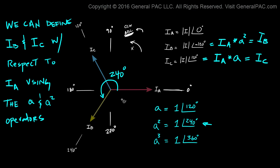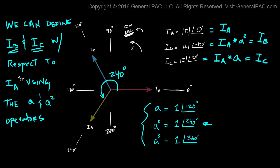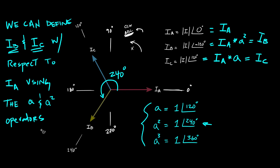Now IA is already at 0 degrees, so technically we don't need to shift it — we just leave IA as is. So what we're doing with this A operator is defining IB and IC with respect to IA using the A operator. The A operator is doing nothing but shifting a phasor in a particular direction by a particular number of degrees.